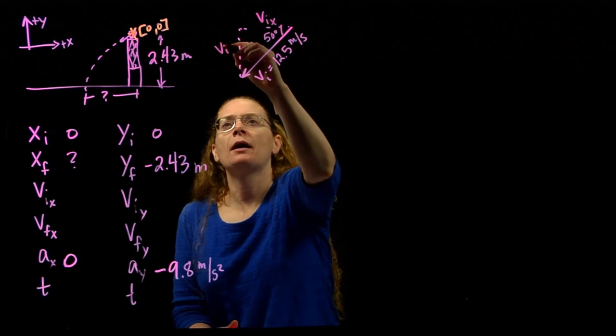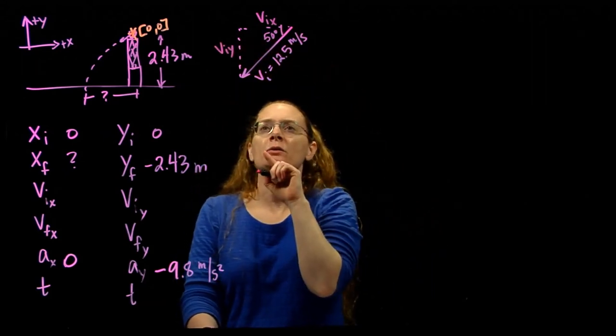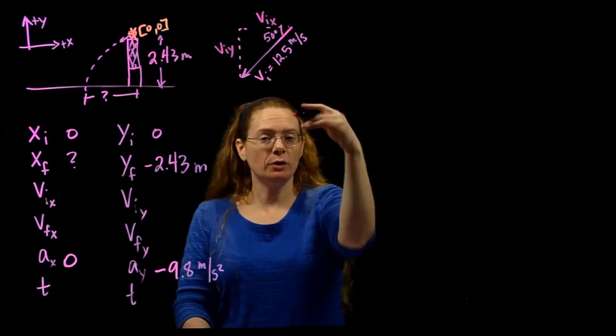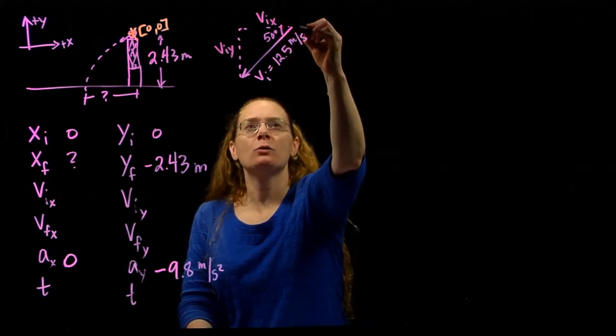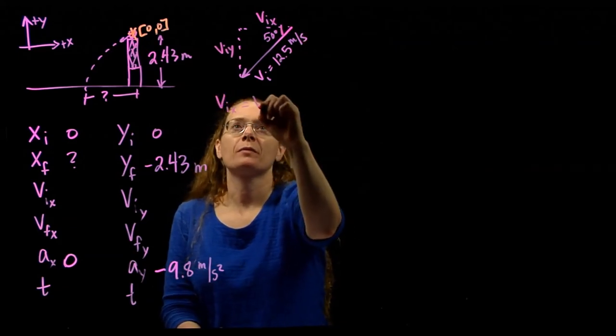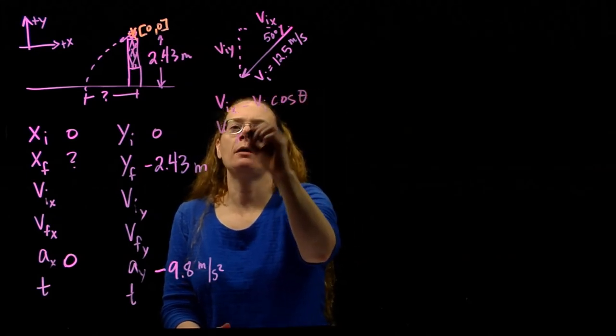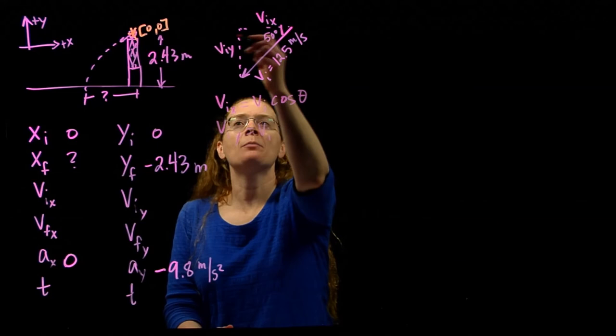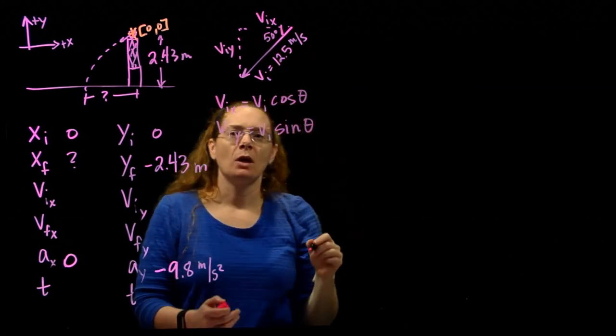So we need to break that up into its components. Here's vix, horizontal. Here's viy, vertical. And we need to do the trig. So I'm using the shortcut again. This side, vix, is adjacent to the angle, so that's my cosine component. So it's vi cosine times the angle. viy is opposite the angle, so that's the sine component.